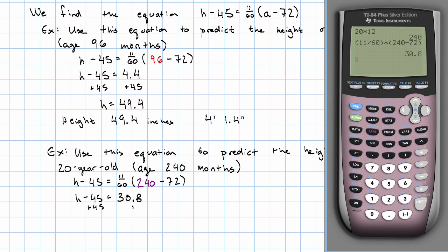Add 45 to both sides. H is 75.8, 75.8 divided by 12.